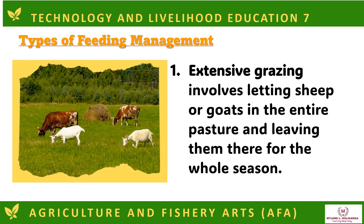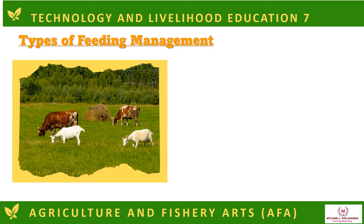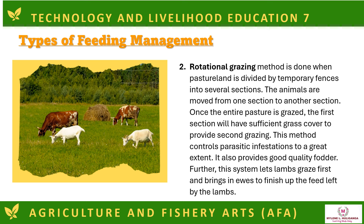Types of feeding management. First is extensive grazing, which involves letting sheep or goats in the entire pasture and leaving them there for the whole season. Next is rotational grazing, done when pastureland is divided by temporary fences into several sections. The animals are moved from one section to another. Once the entire pasture is grazed, the first section will have sufficient grass cover to provide a second grazing. This method controls parasitic infestations to a great extent and provides good quality fodder.